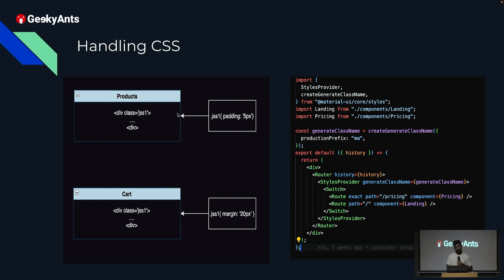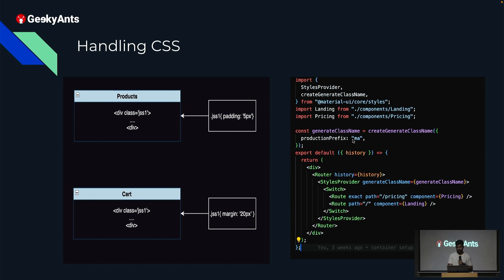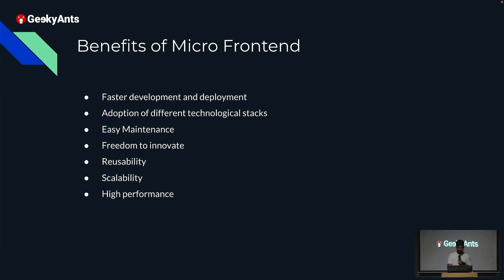If you have a products MFE and a cart MFE, both may generate jss1 in production — one with a padding of 5px and the other with 20px — and they will conflict and overwrite each other. To eliminate this, Material UI provides a generateClassName utility. You assign a unique prefix per MFE — for example, 'ma' for marketing — which gets prepended to jss1, making class names unique and preventing CSS conflicts across MFEs.